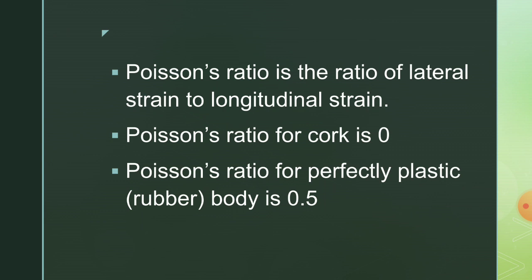Poisson's ratio is the ratio of lateral strain to longitudinal strain. Poisson's ratio for cork is 0, and for a perfectly plastic body such as rubber it is 0.5, which is the maximum value. Sometimes questions come in SSC exams asking whether Poisson's ratio can be greater than 0.5 — the answer is no.